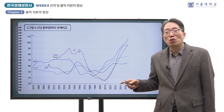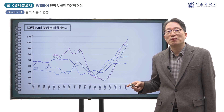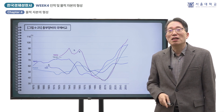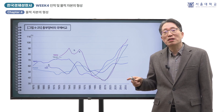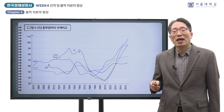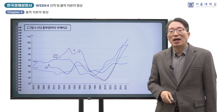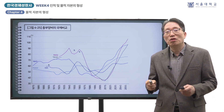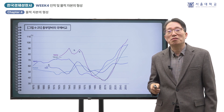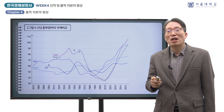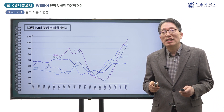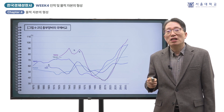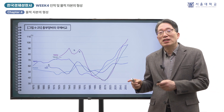이것은 동아시아 국가가 안고 있는 공통의 과제라 할 수 있습니다. 한국에서 물적 자본 형성은 인적 자본의 형성과 긴밀히 연결되어 있습니다. 물적 자본 형성을 가능하게 한 저축률의 급상승은 1960년대 이후 출산율의 급격한 하락과 밀접한 관계가 있습니다. 출산율 하락은 자녀의 양과 질의 트레이드오프에서 양보다는 질을 선택한 결과로 볼 수 있으며, 자녀의 수를 줄이는 대신 자녀 1인당 교육 투자를 늘리는 선택을 했음을 뜻합니다.